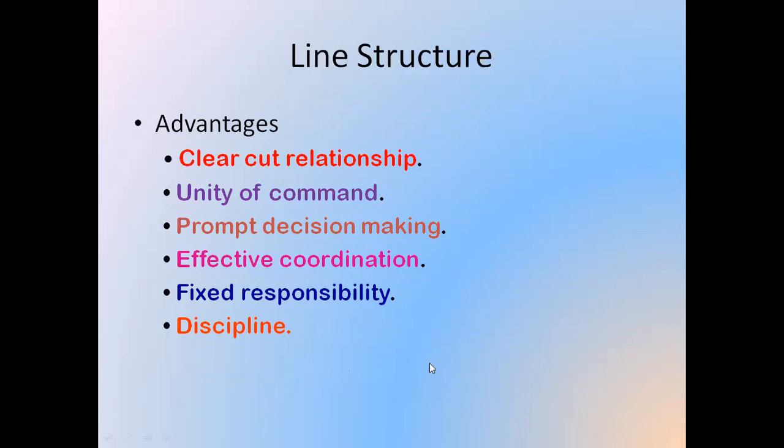Now we see what are the advantages of the line structure. First, clear-cut relationships: we find a clear hierarchical structure showing who is reporting to whom and who is supervising whom. Second, unity of command: personnel working in the line structure receive instructions from one and only one boss. Third, prompt decision-making: since the hierarchical structure is clearly defined with clear powers, authorities, and responsibilities, decision-making is quick. Fourth, effective coordination among line personnel. Fifth, fixed responsibility: since authority and responsibility are clearly defined, everyone's responsibility is fixed and there is discipline in the line function.